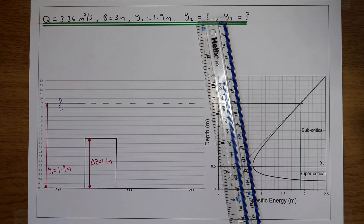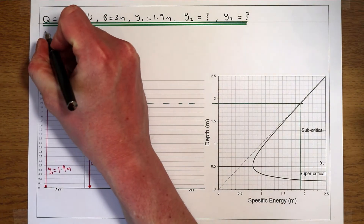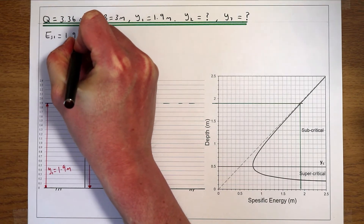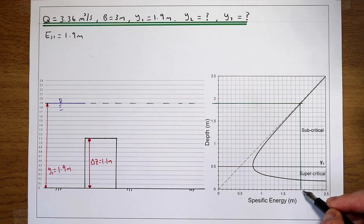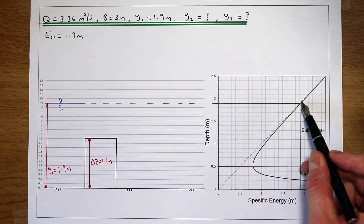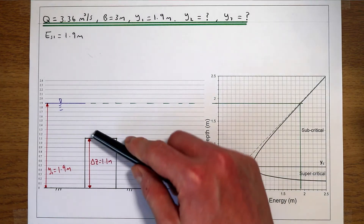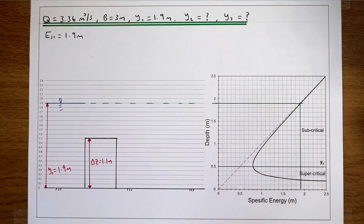I'm going to round that down and say that our specific energy at point 1 is 1.9 metres — that's the point at which our flow depth intersects the profile, and if we draw a line down to the x-axis that gives us that level of specific energy. So what we want to know is what's going to happen when we put a 1.1 metre blockage in the channel.